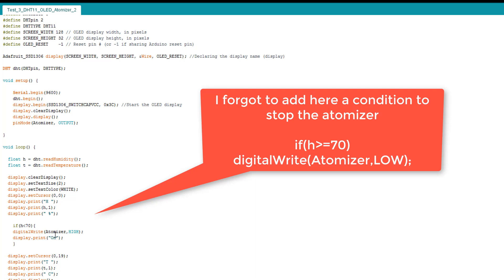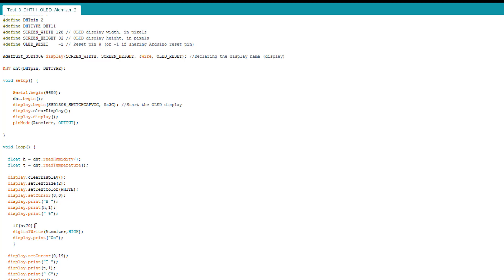If the humidity is below a level that I can set from here, the atomizer starts working. Otherwise it will stop the humidification of the room. Here I've chosen 70—I know it's a little bit big, you can use whatever value you want.